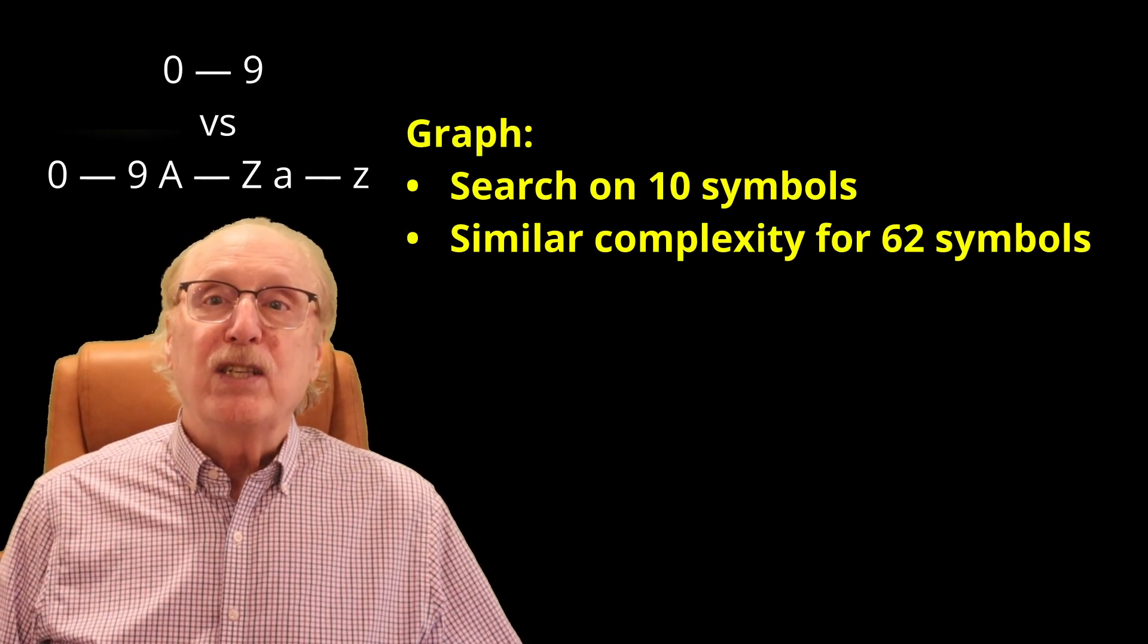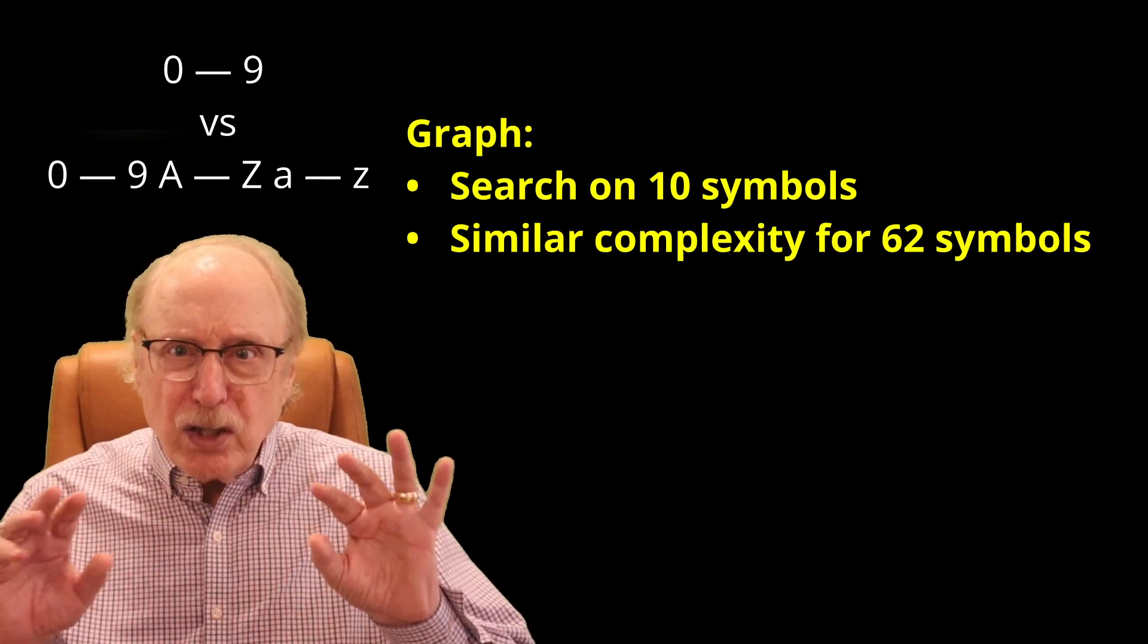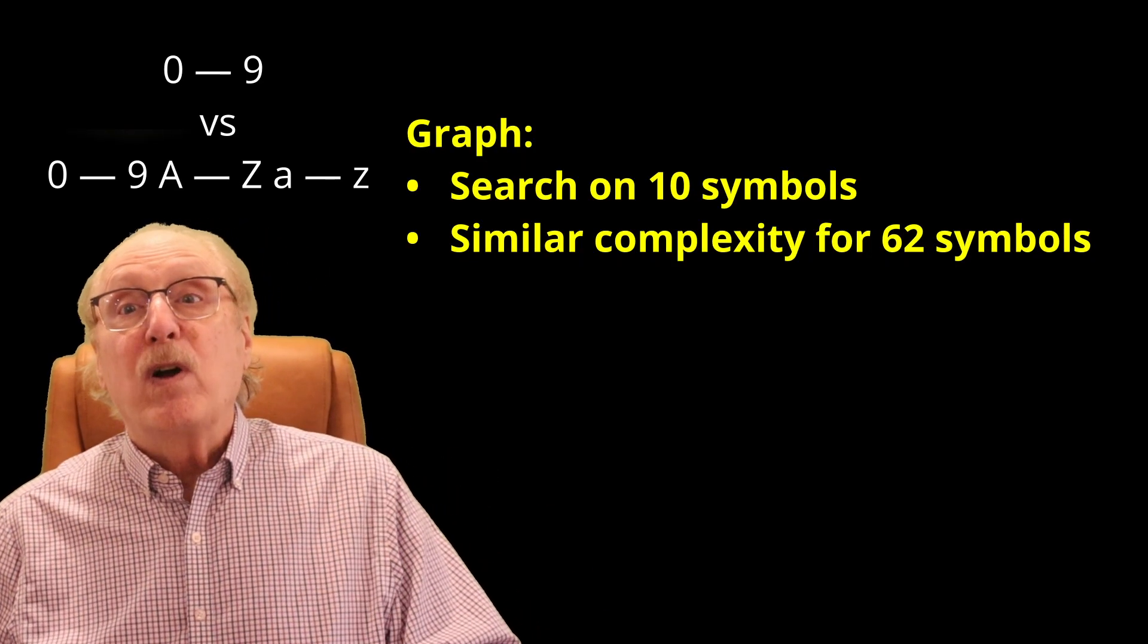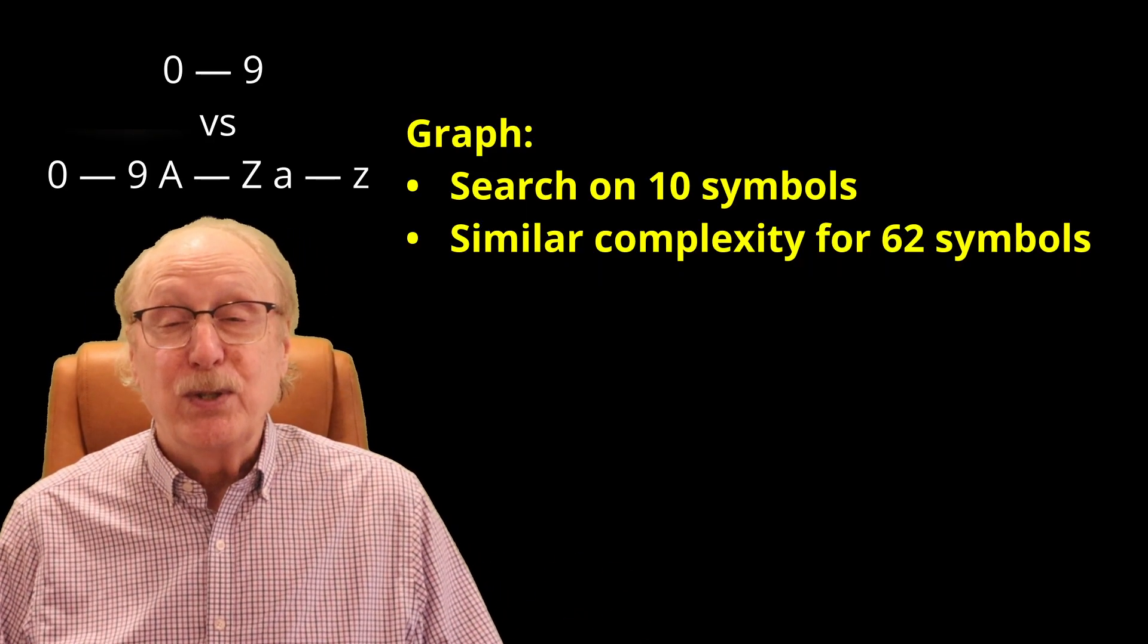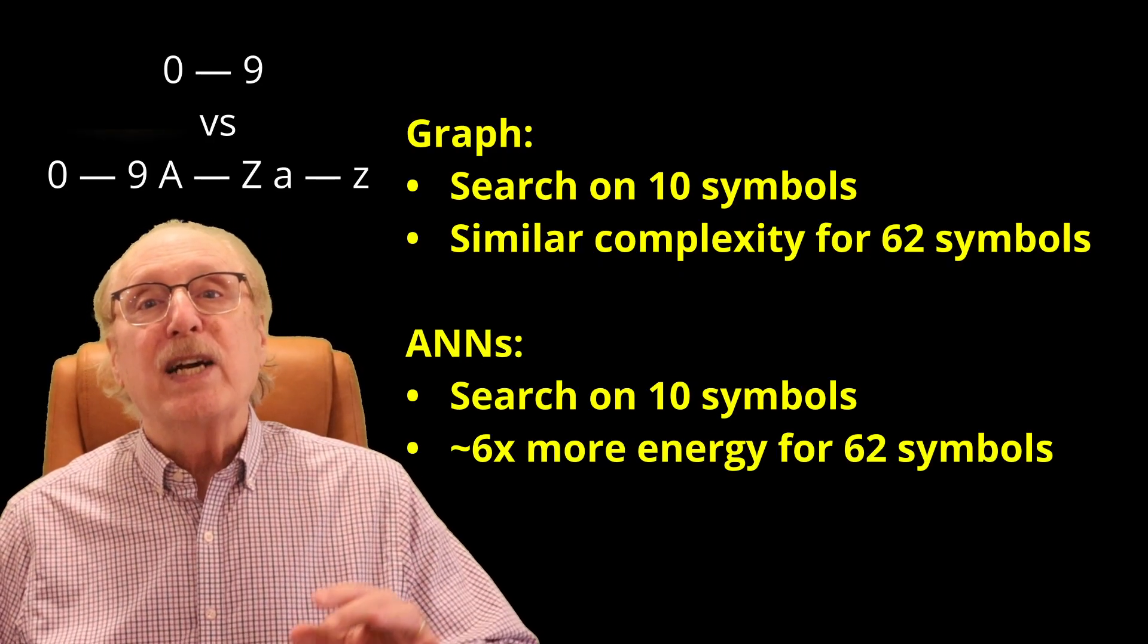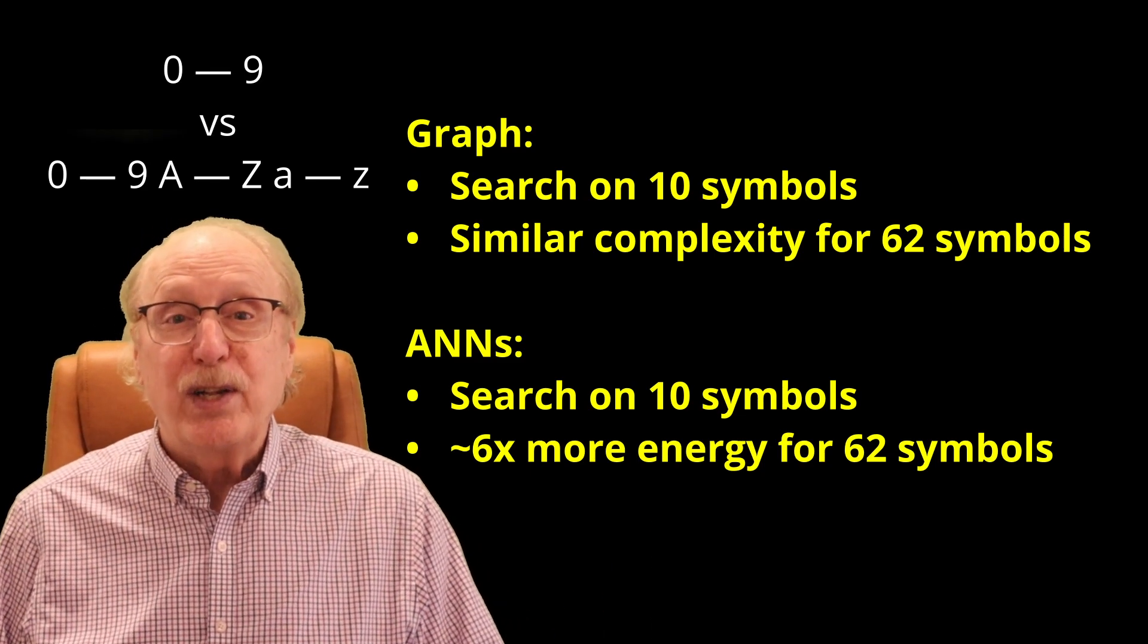So even in a simple case like recognizing characters, a graph which recognizes digits would run at essentially the same speed as one which recognizes both letters and numbers, or 62 symbols. In contrast, a neural network which recognizes more symbols requires proportionately more computational energy. So while machine learning burns through petaflops and gigawatts, your brain performs its searches in just a few hops across a graph, all on about 20 watts of energy. And an AI based on this architecture could too.